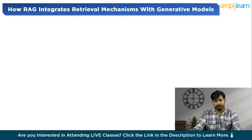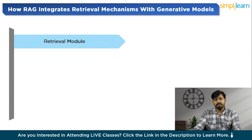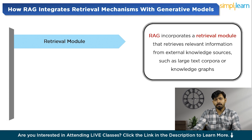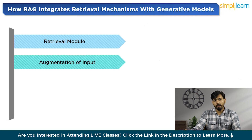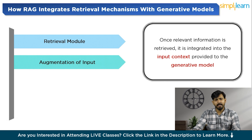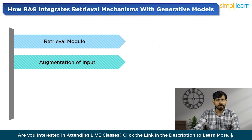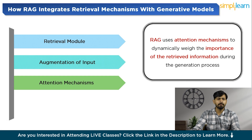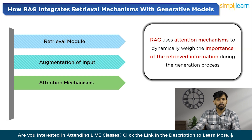This integration occurs in several key steps. First, RAG incorporates a retrieval module that retrieves information from external knowledge sources such as large text corpora or knowledge graphs, employing sparse or dense retrieval techniques. Once relevant information is retrieved, it is integrated into the input context provided to the generative model, enriching it with additional knowledge for a more comprehensive understanding. RAG then uses attention mechanisms to dynamically weigh the importance of retrieved information during generation, ensuring the generated text is informed by the retrieved knowledge.